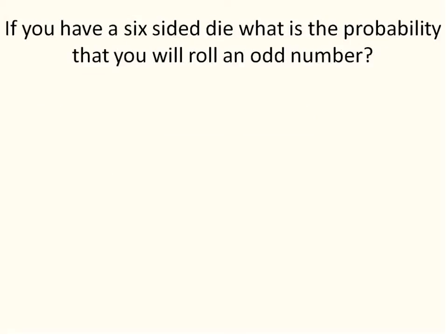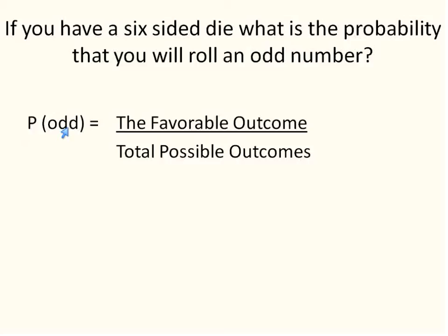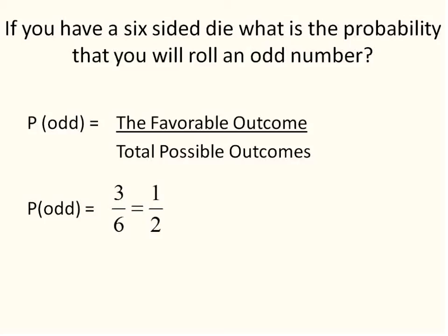Let's look at another example with a six-sided die. What's the probability that you will roll an odd number? We set it up the same way: favorable outcomes over total possible outcomes. The odd numbers on a six-sided die are one, three, and five — so there are three favorable outcomes. The total possible outcomes are still six. So we write this as three over six, which reduces to one-half. There's a one-half, or fifty percent, chance that you will roll an odd number.